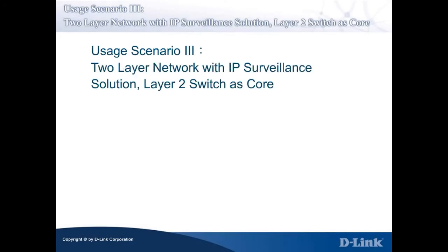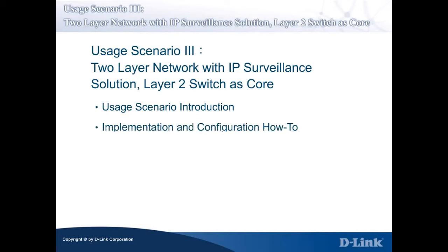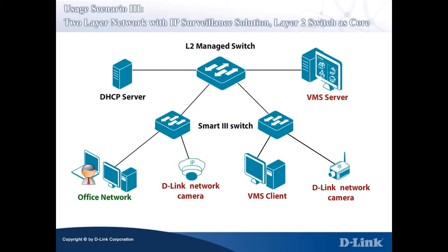Usage Scenario 3 is a two-layer network with an IP Surveillance Solution using a Layer 2 Switch as the Core. In the following slides, we will introduce the third scenario and talk about how to implement and configure Usage Scenario 3 Auto Surveillance Network. It is a two-layer switched network with a D-Link Layer 2 Switch as the Core Layer Switch and Smart 3 Switches as the Access Layer Switches, as shown in the diagram.